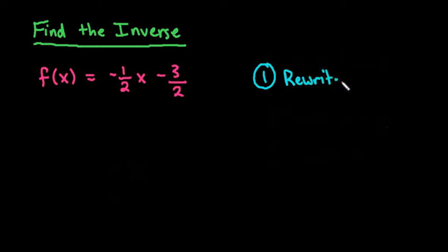Because remember that f(x) is just another way of writing y equals something. And for ease of solving this, we're going to rewrite it as y equals negative one-half x minus three-halves.